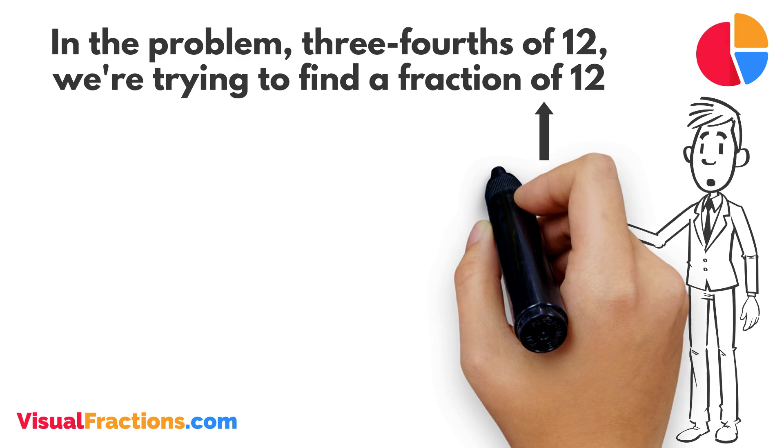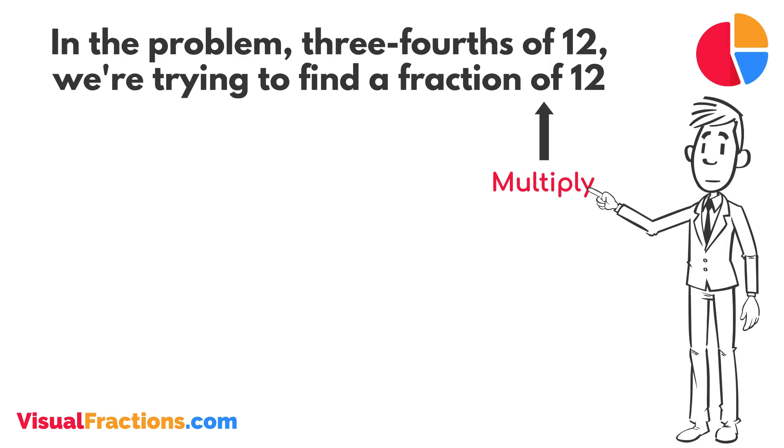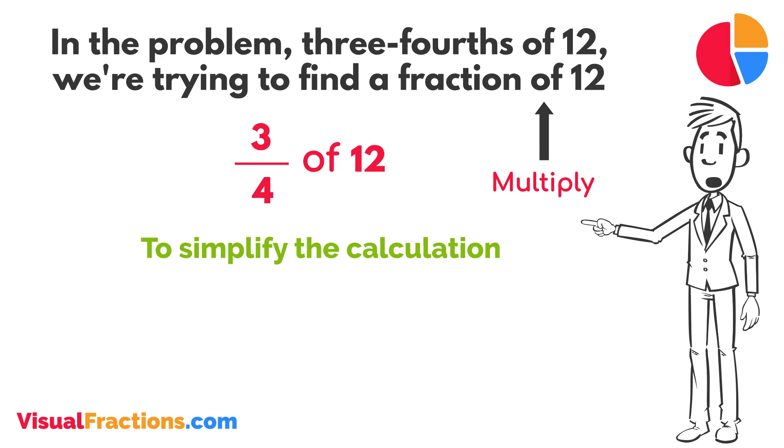The word 'of' in mathematics typically means to multiply, so we rewrite our problem as multiplication: 3 quarters times 12. To simplify the calculation, we first convert our whole number into fraction form, writing 12 as 12 over 1. This transformation makes it easier to work with our numbers as fractions.